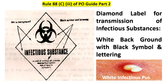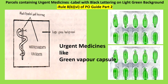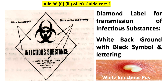The next image question: infectious substance, as per Rule 88C3 of PO Guide Part 2, should have a white background label with black symbol and black lettering. You should remember that in all three image questions, the lettering is always black — whatever the label color may be, the lettering is always black. You blindly remember that. But the background changes: for medicines it is green, for perishable biological substance it is violet, and for infectious substance it is white.